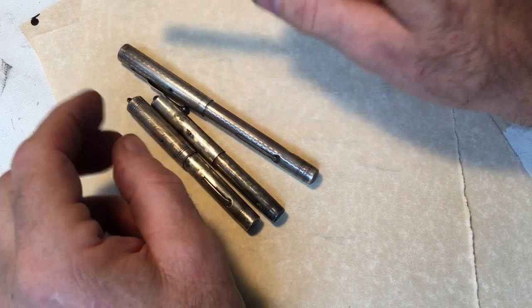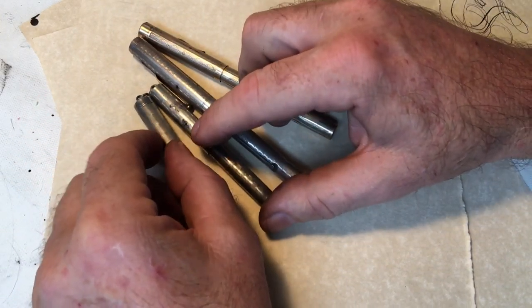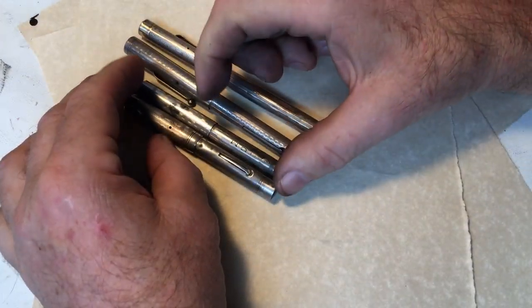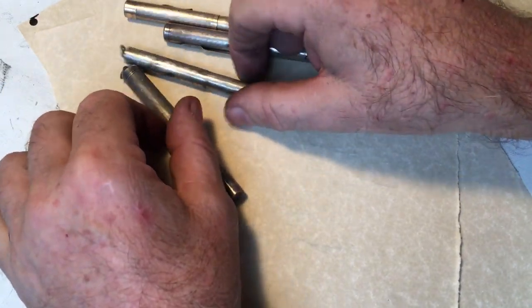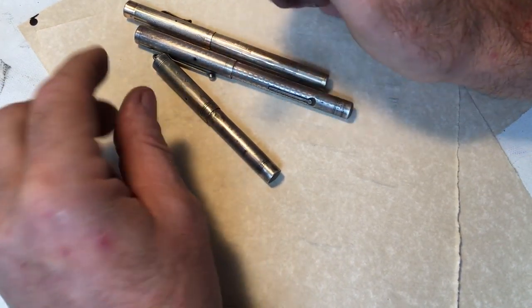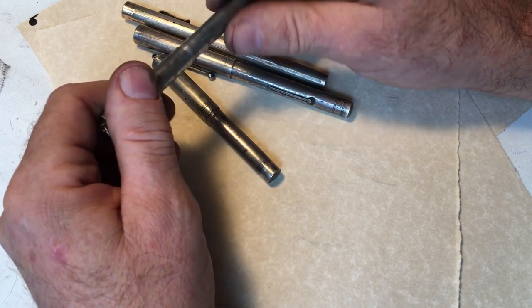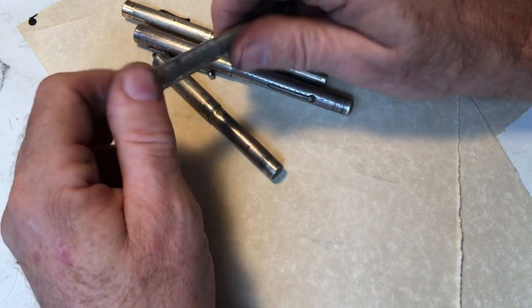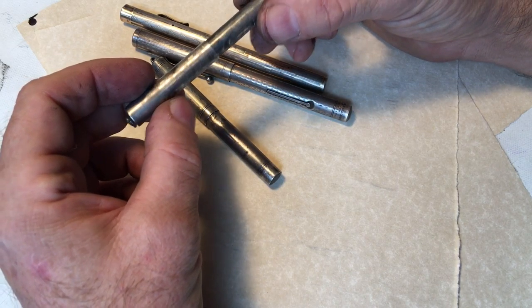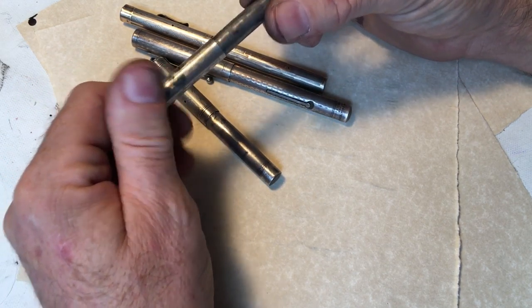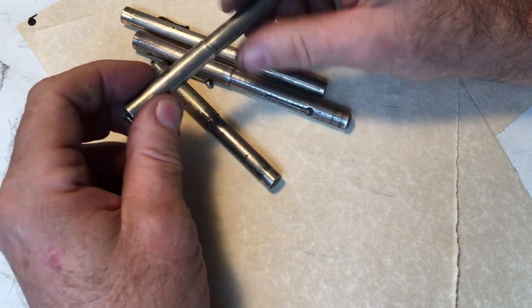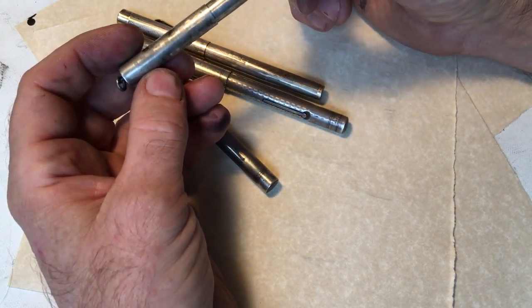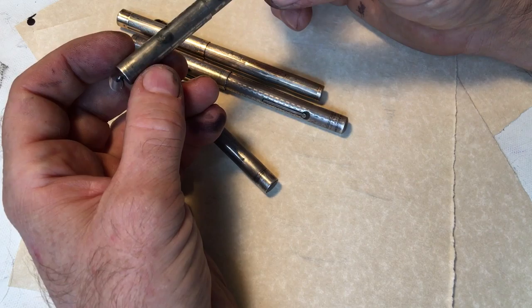One of the things that I enjoy doing is matching up a nib in the correct pen. It's not just matching up a Waterman number two in a Waterman number two body. It's not just matching up a Waterman number two nib made in 1910 with a pen from 1910 either. What I'm talking about is matching up the exact nib style with how the pen will be used and what the pen might look like.